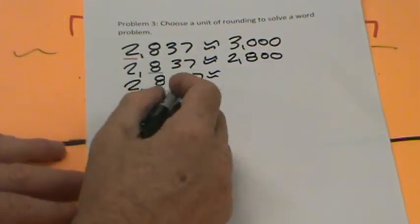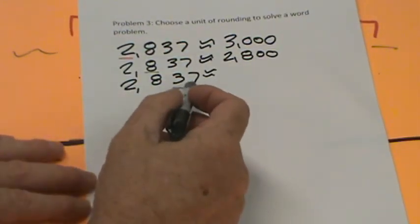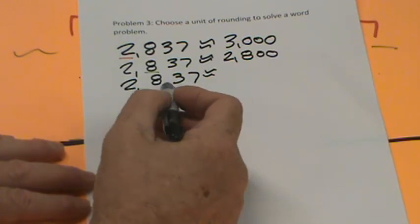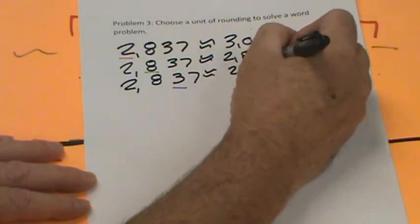And finally, let's do the tens. What's the midway point in 10? 0 to 10? 5. Is 7 greater than 5? It is, so we'd round up. So this would become 2,840.